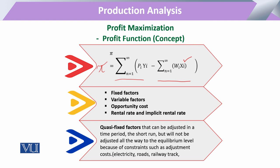Here the concept of opportunity cost becomes relevant. Opportunity cost refers to the amount that a resource could have earned in its best alternative use. For inputs that are not traded in the market, we need to find their implicit rental rates in order to bring them into the profit function calculation.